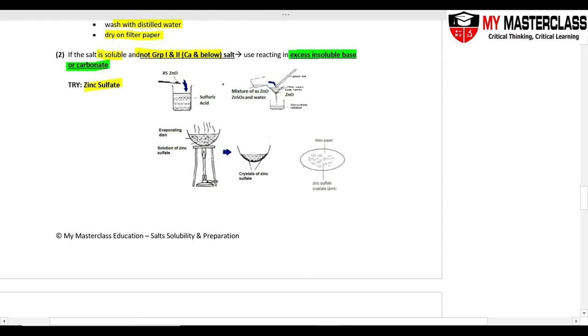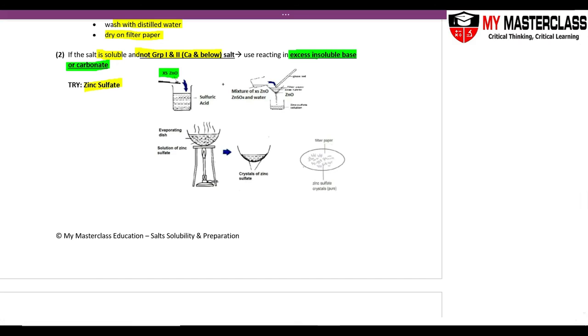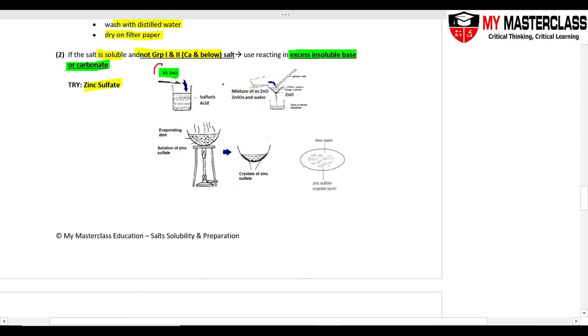This is what we are going to do: I add excess zinc oxide, because I pick the oxide hydroxide carbonate, to the acid. Because the zinc oxide is added in excess, all your sulfuric acid is already used up.